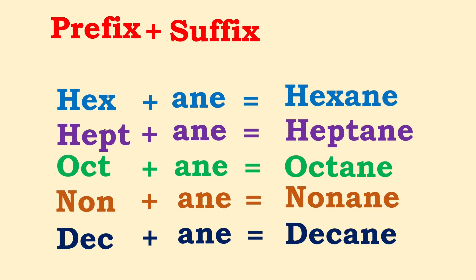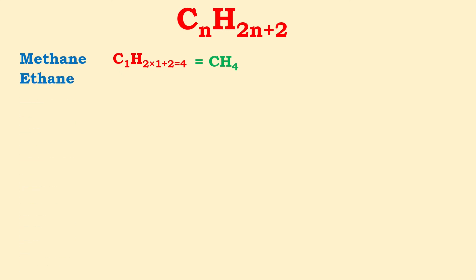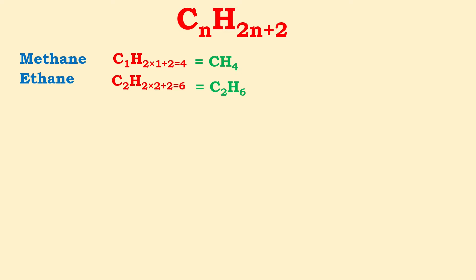Now let's talk about their molecular formulas. We can write the molecular formula using a general formula for the alkane group: if the number of carbon atoms is n, then hydrogen will be 2n + 2. For methane, n = 1, so hydrogen = 4, giving CH₄. For ethane with two carbon atoms, the molecular formula becomes C₂H₆. For propane, n = 3, giving C₃H₈.